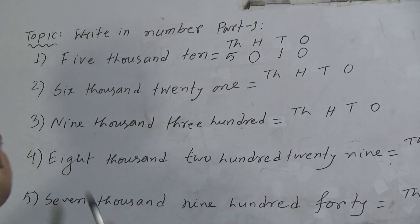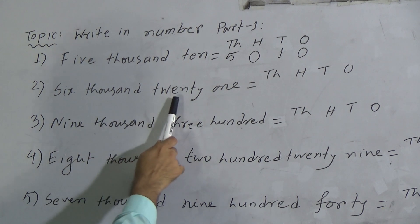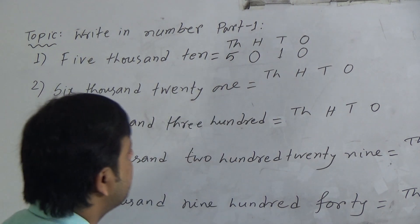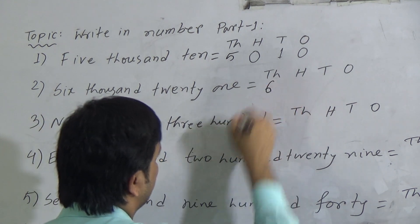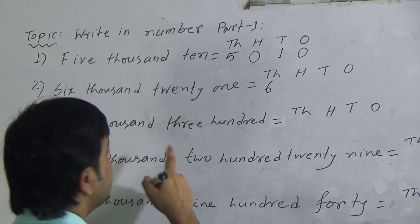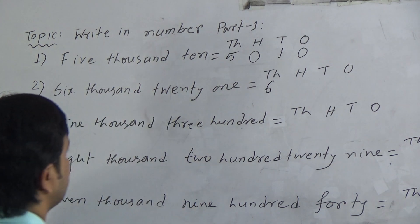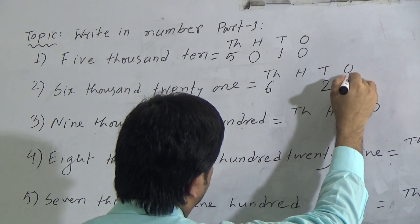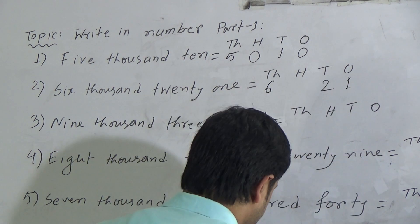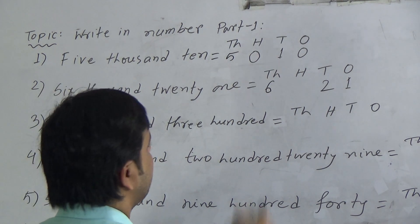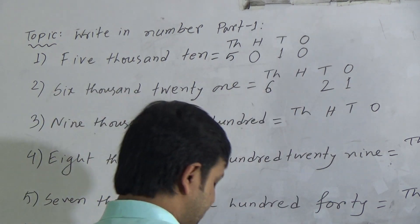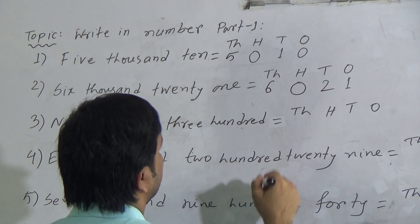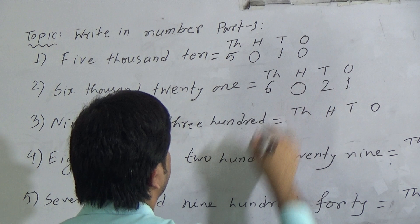Next question: six thousand and twenty-one — 6021. We have to write 6 below thousands. To write 21, we write 2 in tens position and 1 in ones position. The hundreds position is blank, so we fill it with 0. This is 6021.